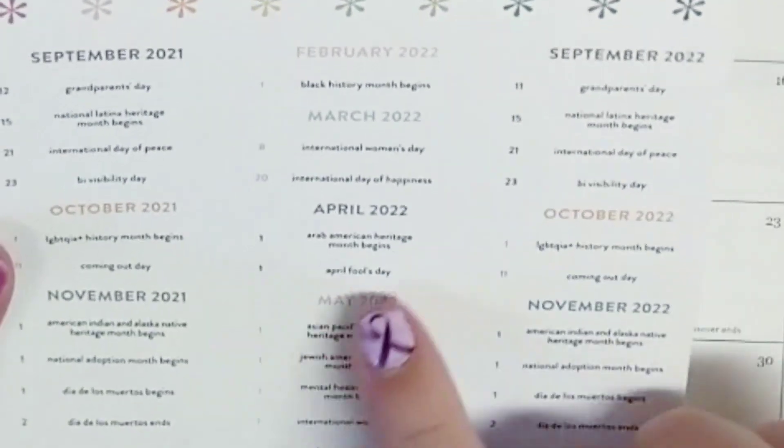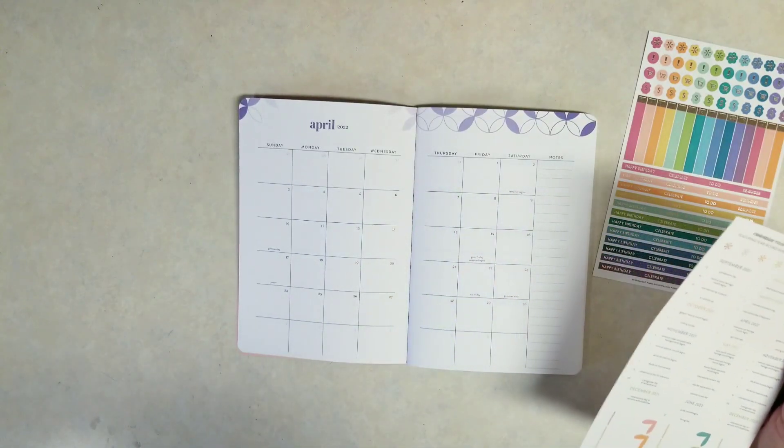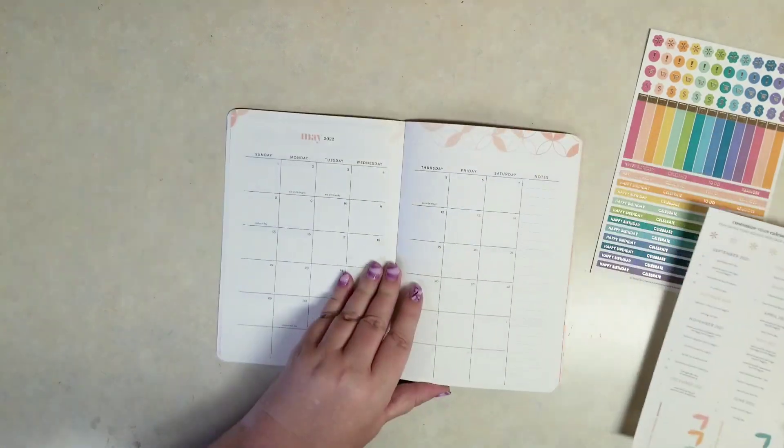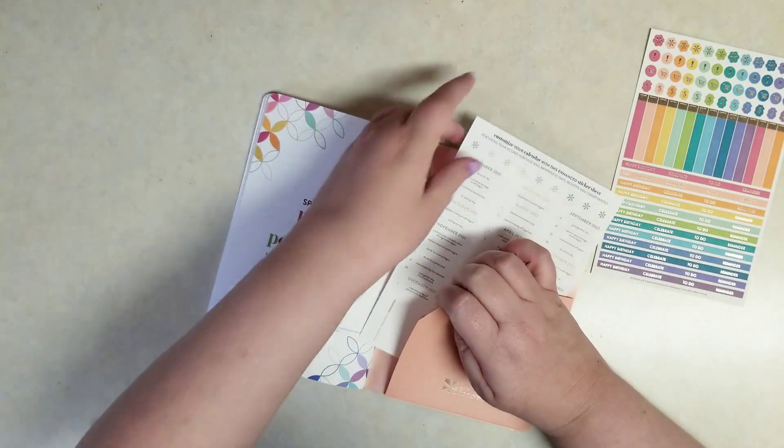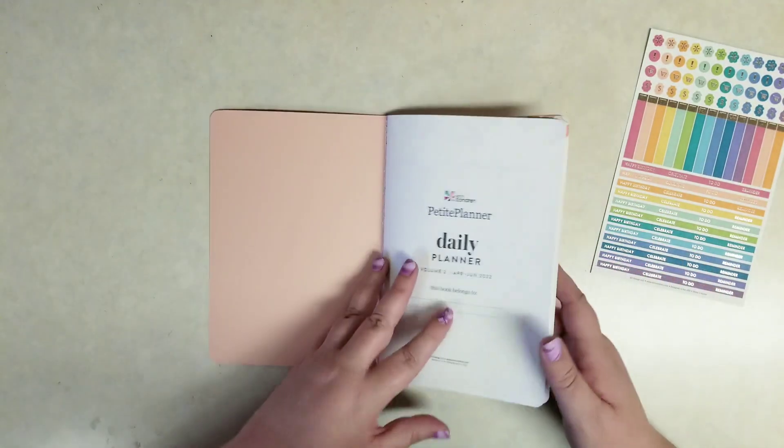What's nice is they already have them separated by the month for you. And you can see we have a couple holidays there. I don't think I'm going to add those in. I don't need April Fool's Day in my planner. We get it. Okay, then let me flip back to the front.